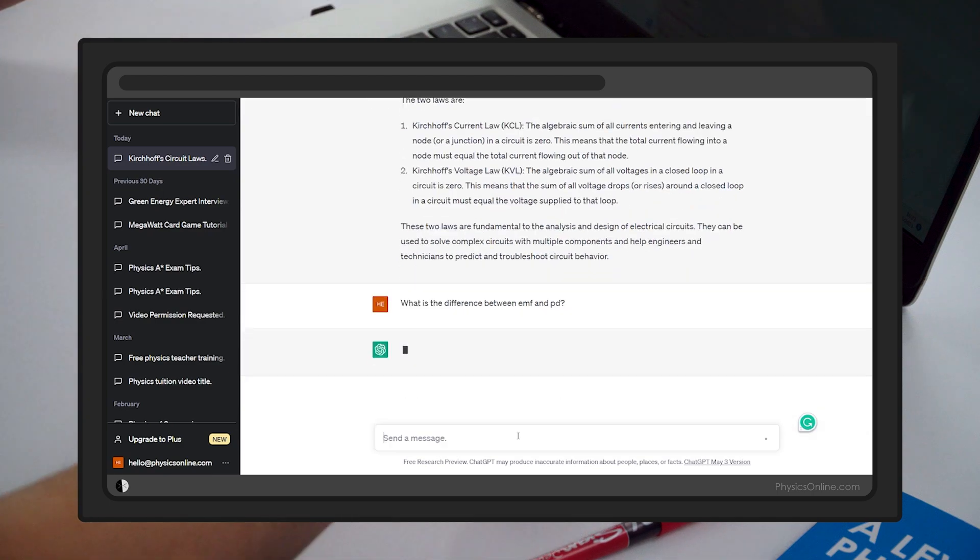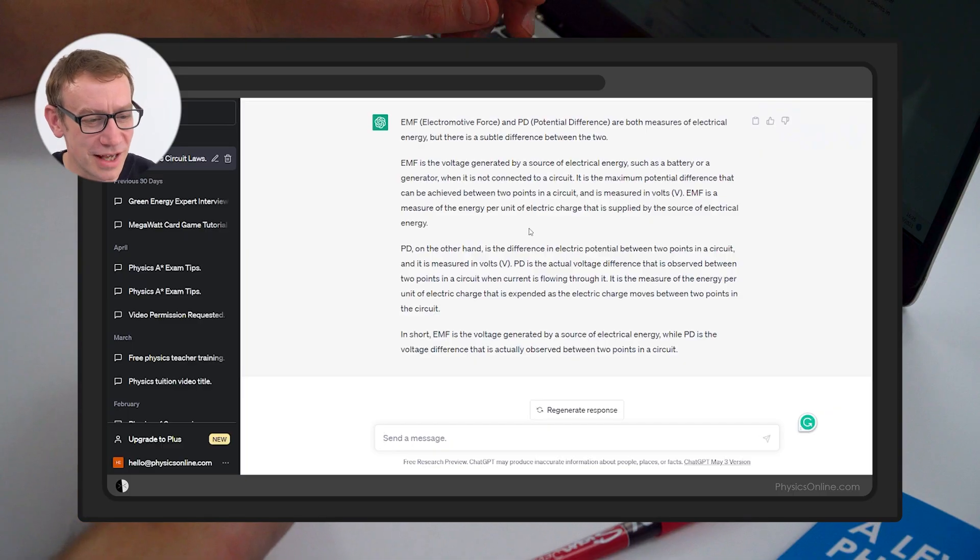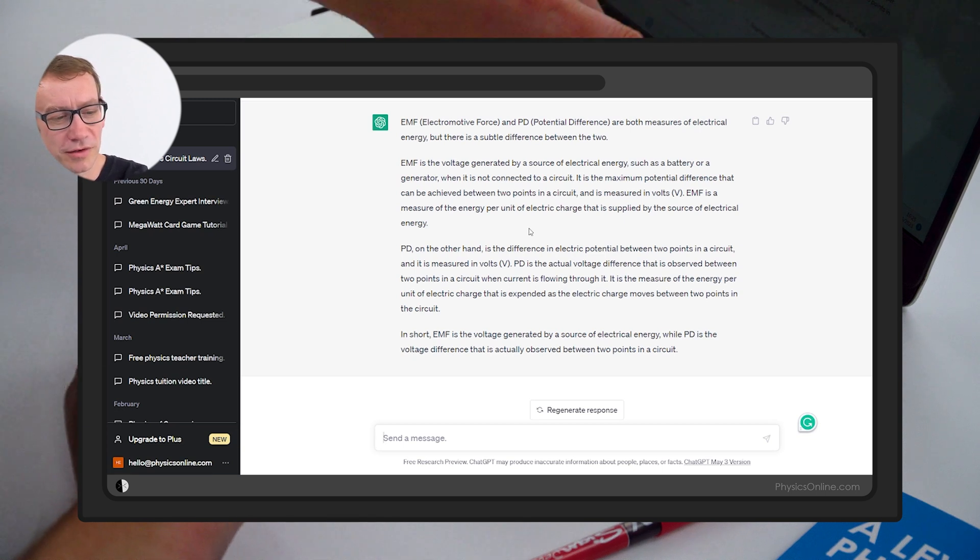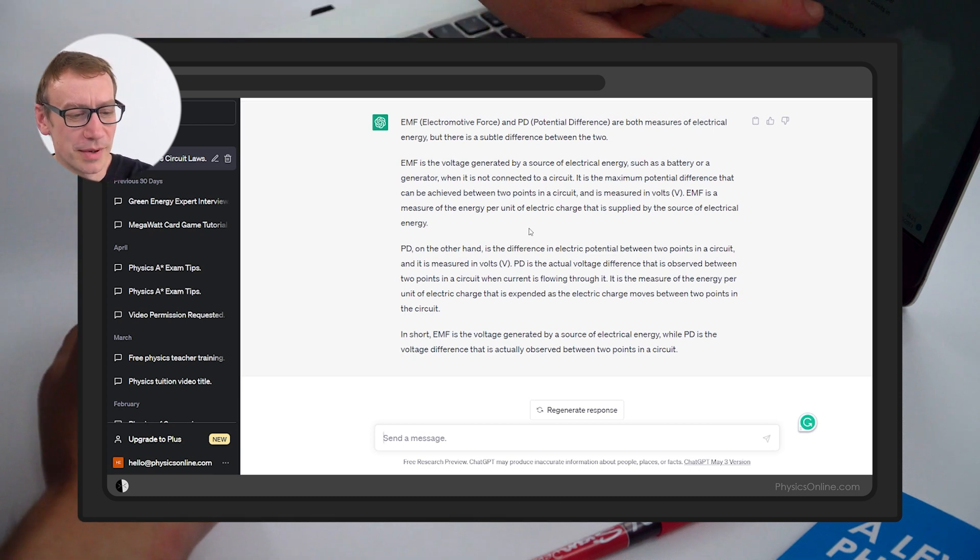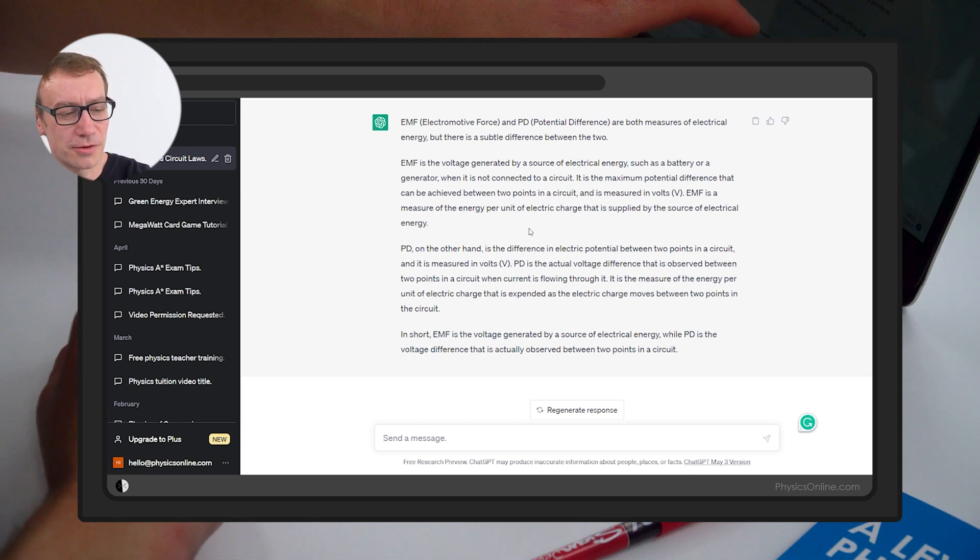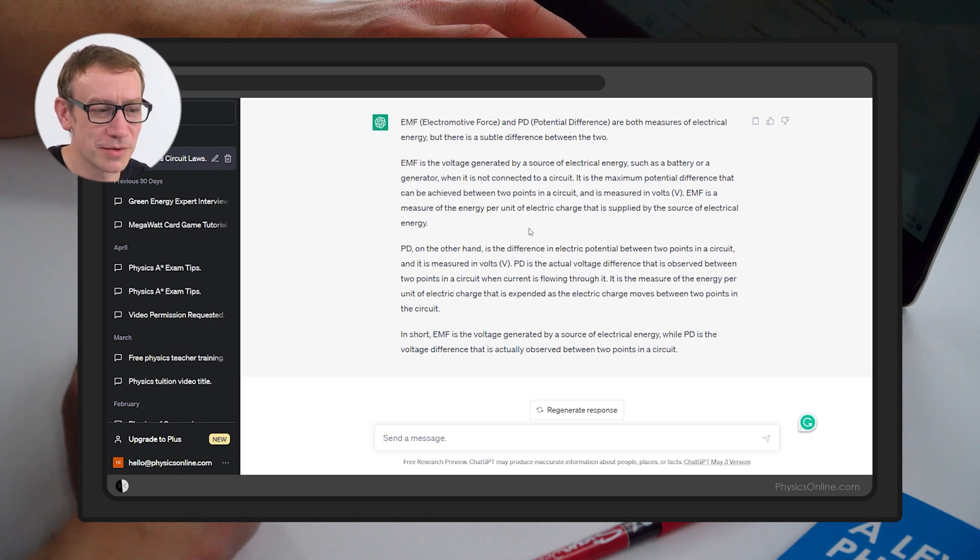So I'm just going to ask what is the difference between EMF and PD? This starts out by saying that EMF and PD are both measures of electrical energy. I wouldn't say that's a great bit of physics there, but it does then say that EMF is a measure of the energy per unit of electrical charge supplied by the source of electrical energy. I guess that's okay. Then it talks about PD being about the energy per unit of electrical charge expended as the electric charge moves between two points in a circuit. Again, I think that's not a bad description.